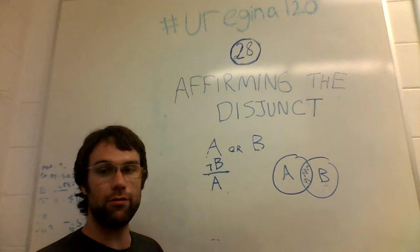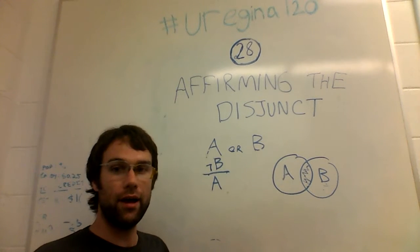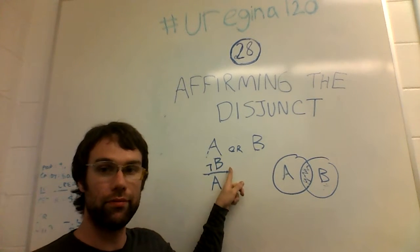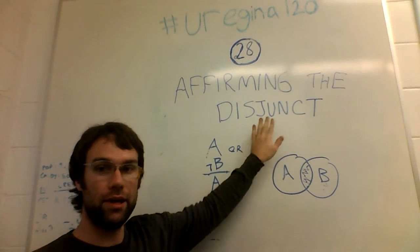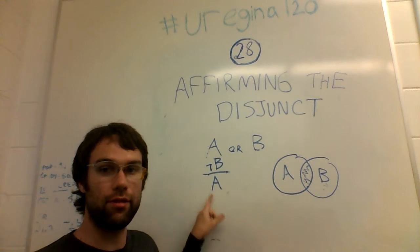Similarly, if you say that A or B is true and B is not true, well if A or B is true and B isn't, that leaves A as the thing that is true.